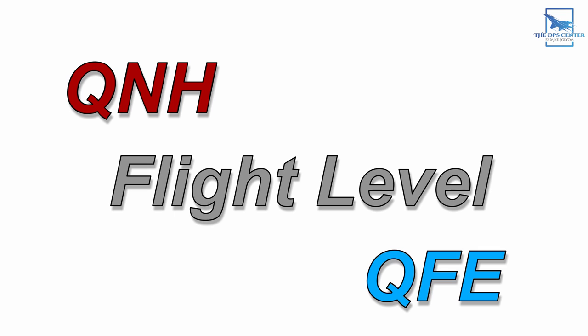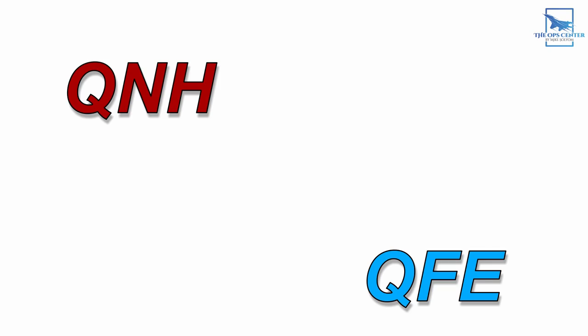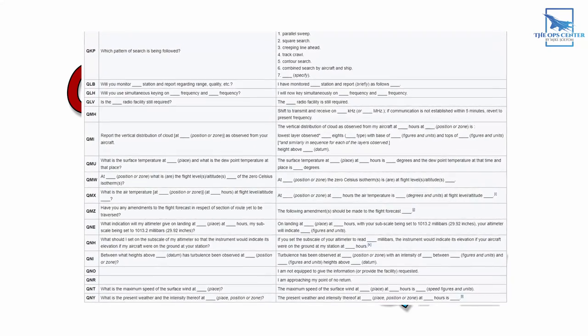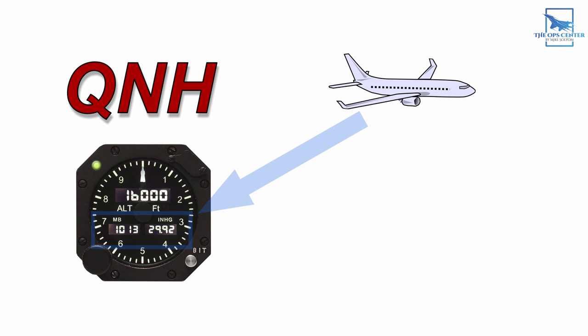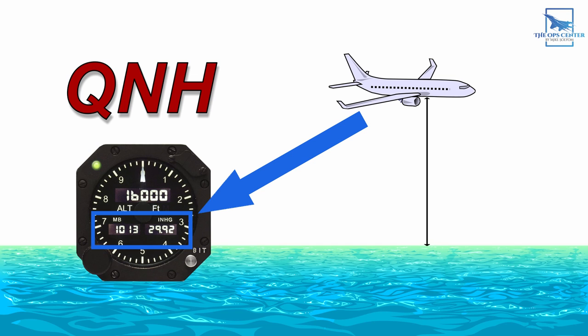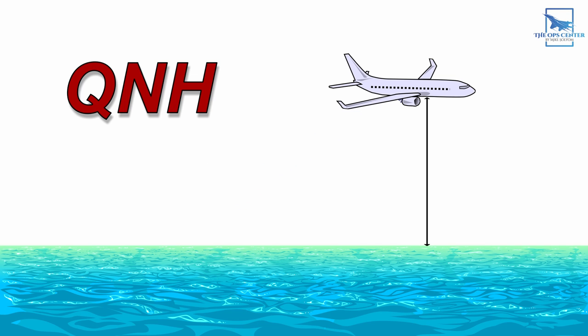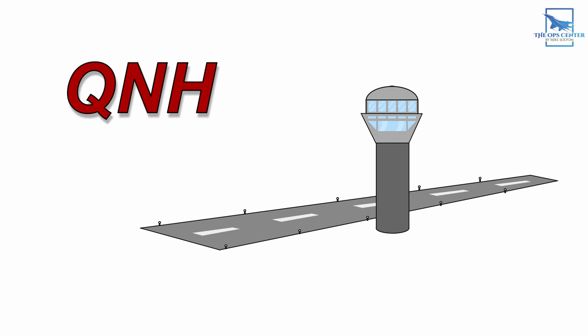You might have also heard the terms QNH, QFE, and flight level in regards to the altimeter. The first two might look like acronyms, but they're actually brevity codes from a list known as Q codes. QNH is a code word to state that the following number is the setting that should be dialed into the altimeter to adjust it for sea level height. If you dial in that QNH number while sitting on the runway, it will show the runway's height above sea level — so at an airport that's at 1,800 feet MSL, you will see 1,800 on your altimeter with this setting.